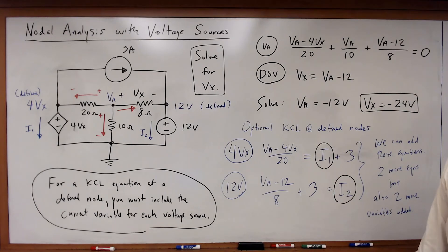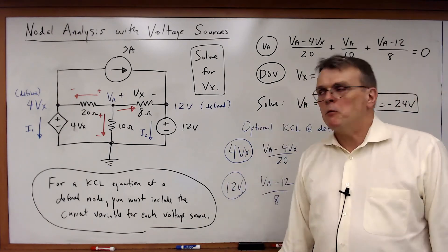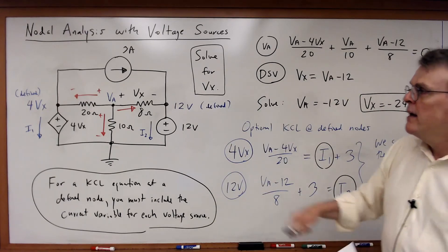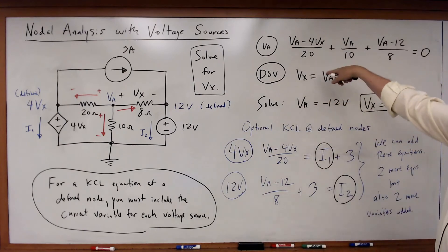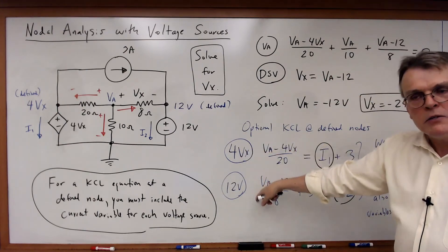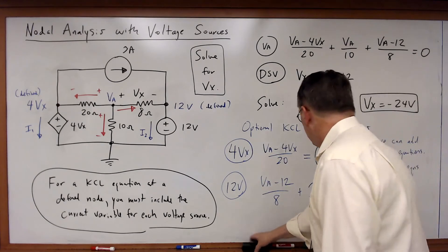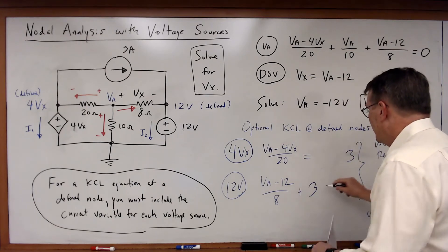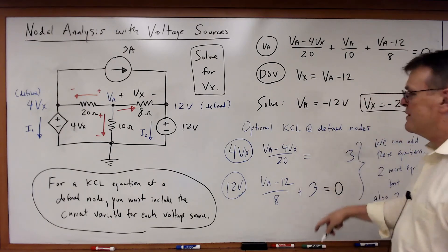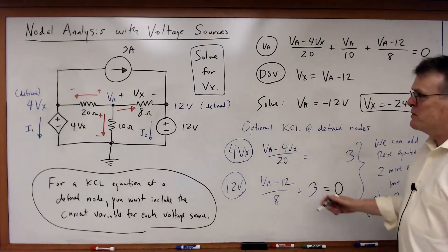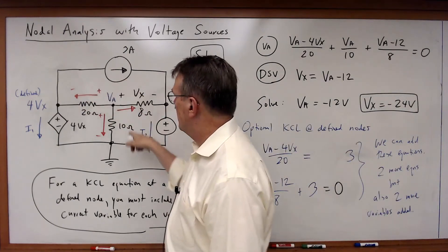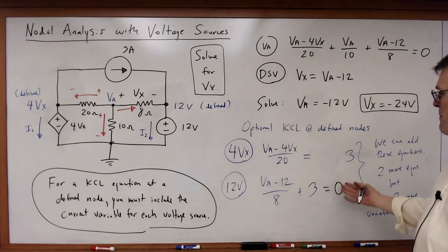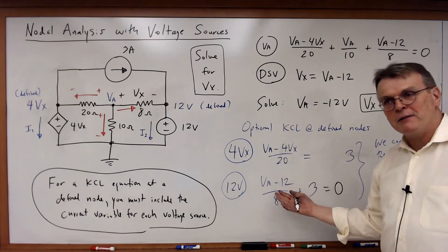What is one of the most common mistakes people make when they're writing problems, doing nodal analysis problems like this? They will write these equations, they'll correctly write those two equations, then they'll decide to add these two equations, and then guess what they forget to do? They forget to include the currents in the voltage sources. So I've seen students, they'll say this current's equal to that current and this current plus this current's equal to zero, and the problem is they can't solve it.